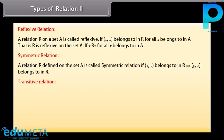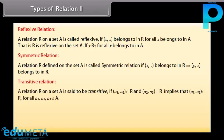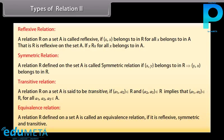Transitive relation: A relation R on a set A is said to be transitive if (a1, a2) belongs to R and (a2, a3) belongs to R implies that (a1, a3) belongs to R for all a1, a2, a3 belonging to A. Equivalence relation: A relation R defined on a set A is called an equivalence relation if it is reflexive, symmetric, and transitive.